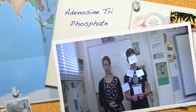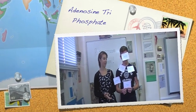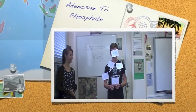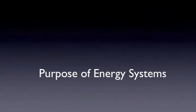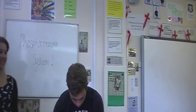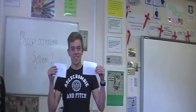In our cells we have a small amount of ATP which lasts one to two contractions. When we exercise we use our ATP. The energy system is to rejoin the ADP to the P to create ATP.